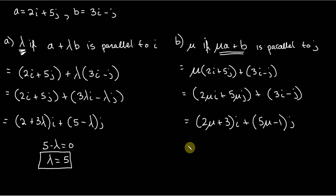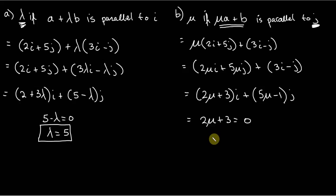And next thing that we want to do is we're told that we need to find mu if mu a plus b is parallel to vector j. Parallel to j. So we want to take 2 mu plus 3, and we want to set that to equal 0. Because it's parallel to j. So we're going to take 2 mu plus 3, set that to equal 0. And from this point, it's quite simple. Because we just subtract 3 from both sides. It's just very simple algebra at this point. Negative 3, we divide by 2 right across both sides, and we get mu equals negative 3 over 2.